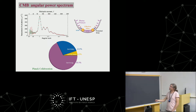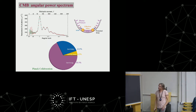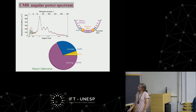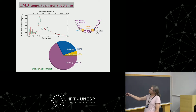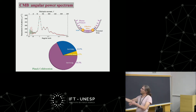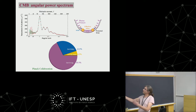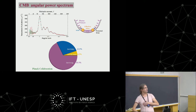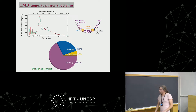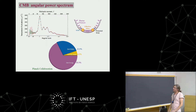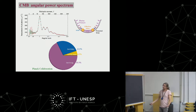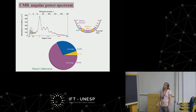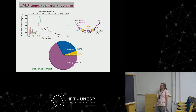To explain CMB observations, one has to introduce a dark matter component that again amounts to 80% of the total matter of the universe. We find this ratio of 80% dark matter to 20% baryons appearing consistently across many decades of distance scales, which is quite intriguing.